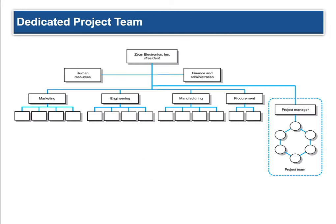Let's look at a dedicated project team structure. Say you have the president, the CFO, other VPs, and human resources. Instead of laying the project across different departments, you create another branch — a special team that's broken out. You have a project manager and then teammates brought in just to do this project. So instead of fitting into the normal hierarchical organization structure, this team is drawn out separately.